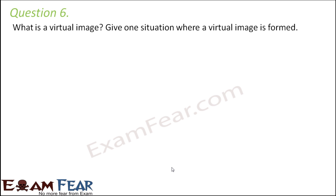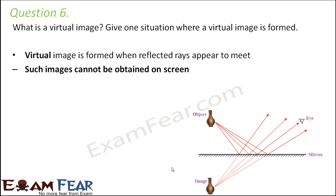Question number six: What is a virtual image? Give one situation where a virtual image is formed. In the case of a virtual image, the reflected rays do not actually meet at a point, but they appear to meet. These images cannot be obtained on a screen and they are always formed on the other side of the mirror. The rays appear to diverge away from each other, but when you extrapolate them using dotted lines, it appears as if they are meeting at a point. Plane mirrors always give a virtual image.